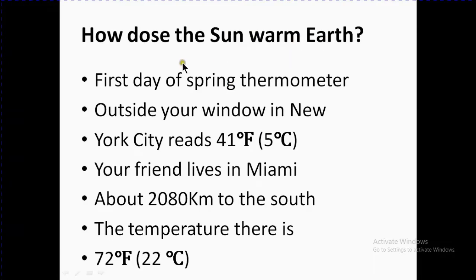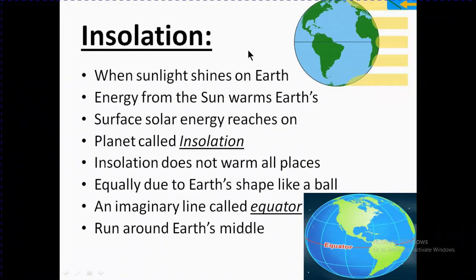To understand this question, let's learn about insolation. When sunlight shines on Earth, the sun rays come and fall on the Earth at different angles. Energy from the Sun warms Earth's surface. Solar energy that reaches the planet is called insolation. This solar energy in the form of sunlight comes in rays that strike the surface of the Earth. This is known as insolation.